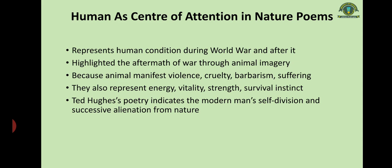He represents human condition during World War I, World War II, and after it. He highlighted the aftermath of war through animal imagery because animal imagery manifests violence, barbarism, and suffering, but also energy, vitality, strength, and survival instinct. Ted Hughes explores animal and natural imagery in its pure form to give a realistic view of what nature, with all its negatives and positives, is. His poetry indicates modern man's self-deviant and successive alienation from nature. The emphasis on nature suggests he is bringing modern man's attention back to his primal instincts and responses.